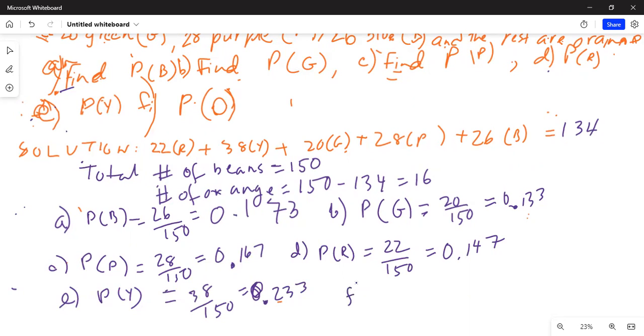And then part F, probability of orange. We already found there are 16 orange out of 150, so this equals 16 divided by 150, which is 0.106.